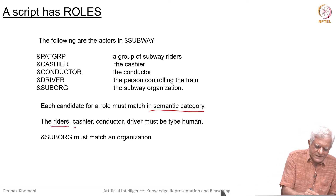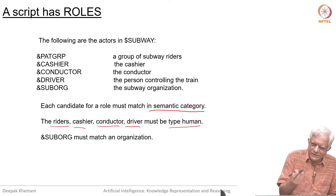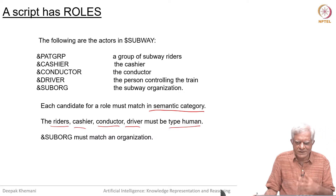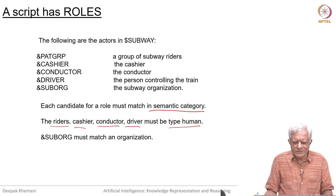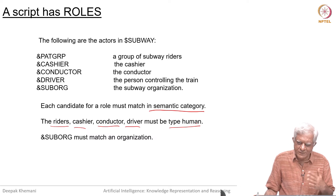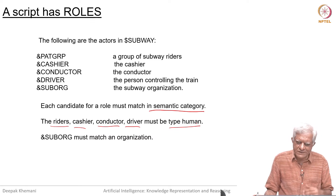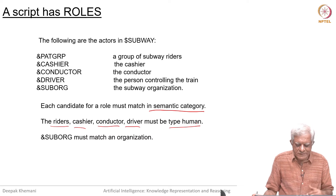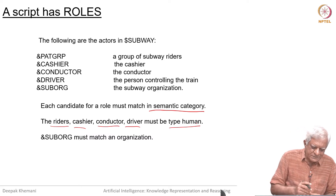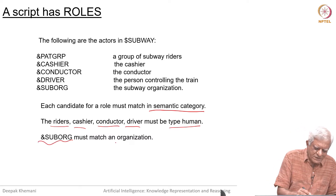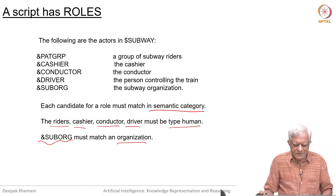The riders, cashiers, conductors, and drivers must be human. Of course, we are already talking about driverless trains - if you go to Dubai you might get into a driverless train. Nowadays we are talking about driverless trucks, which seem to be already operational in parts of the US, and driverless cars are everybody's expectation of the future. But the sub-org must be an organization, because it is a company which is running the subway train.